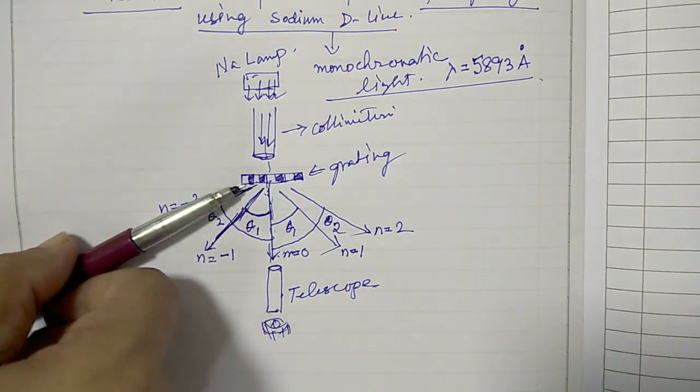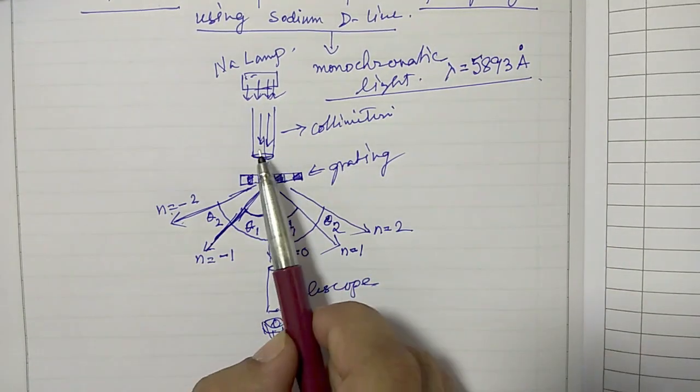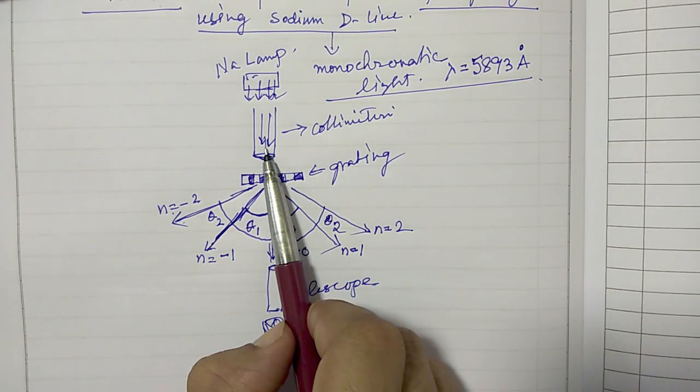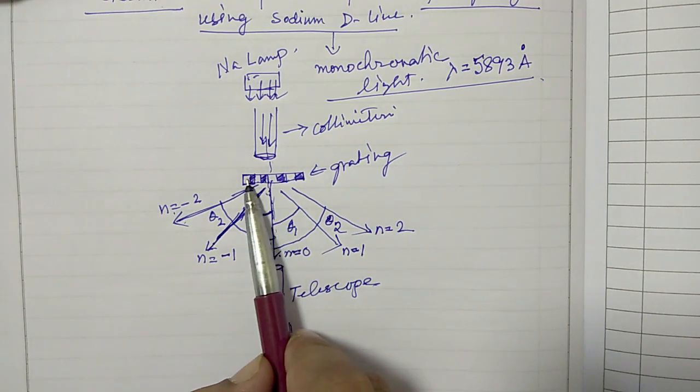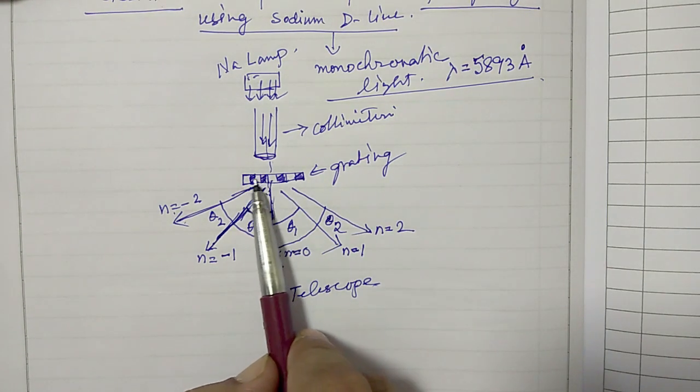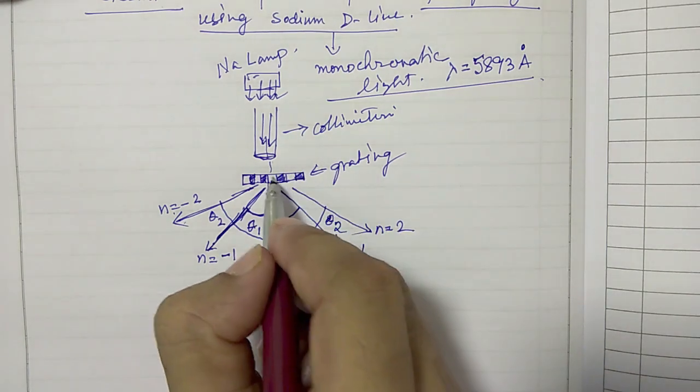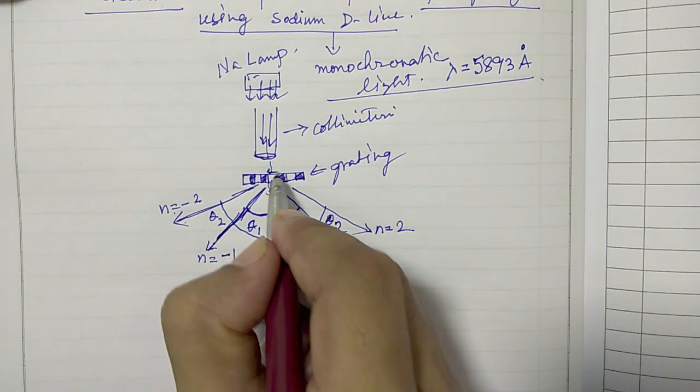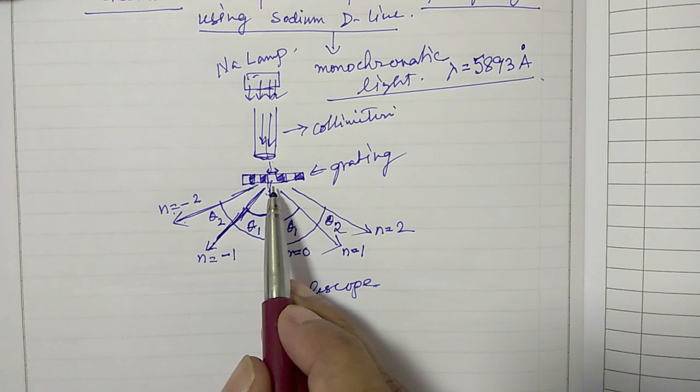How much these lights get diffracted depends on the wavelength, also depends on how many such lines are there or how much is the separation between two consecutive lines in the diffraction.